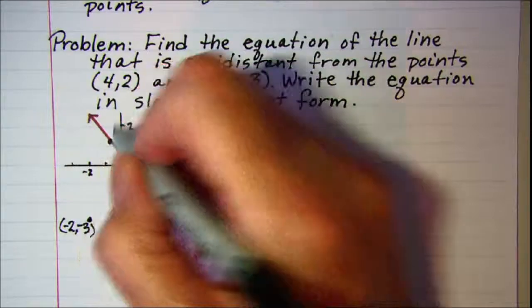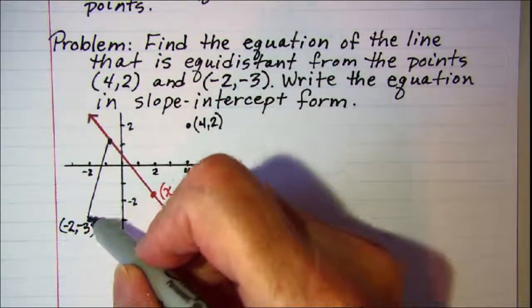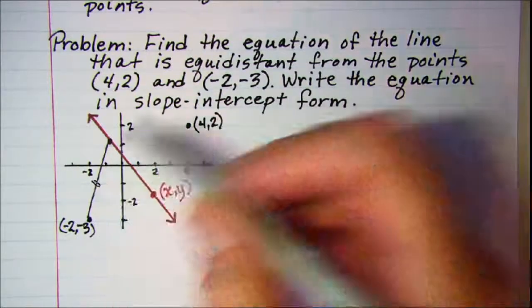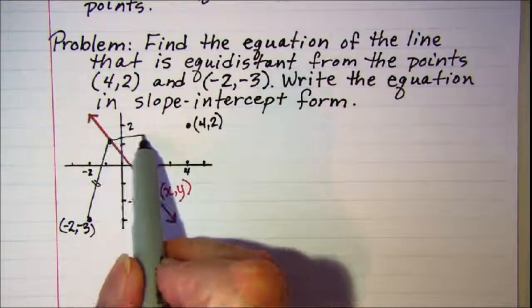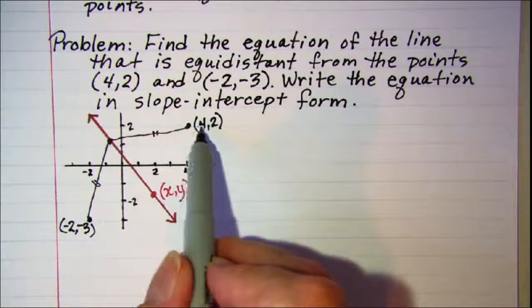For example if I pick this point right here, this distance to (-2, -3) will be equal to this distance from this point to (4, 2).